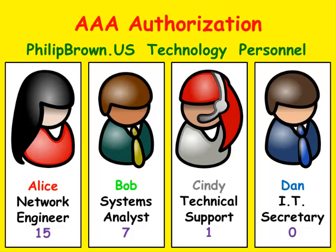So Alice gives herself a Privilege Level of 15, which is the highest level. She will give Bob a Privilege Level of 7, Cindy a Privilege Level of 1, and Dan a Privilege Level of 0. The higher the number, the more commands they can execute.